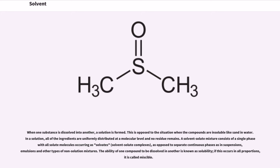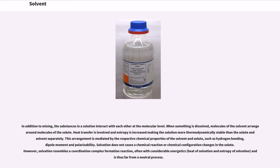The ability of one compound to be dissolved in another is known as solubility. If this occurs in all proportions, it is called miscible. In addition to mixing, the substances in a solution interact with each other at the molecular level. When something is dissolved, molecules of the solvent arrange around molecules of the solute. Heat transfer is involved and entropy is increased making the solution more thermodynamically stable than the solute and solvent separately.